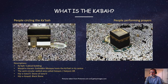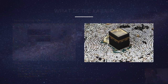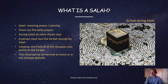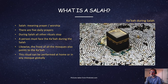In the left picture, people are circling around the Kaaba, and in the right picture, people are performing the daily prayers or worship. This is Salah. Top view showing the Kaaba during Salah. The word Salah means prayer or worship. Generally, there are five daily prayers. During Salah, all other rituals stop. A person must face the Kaaba during the Salah. Likewise, the front of all the mosques also points to the Kaaba. This ritual can be performed at home or in any mosque globally.